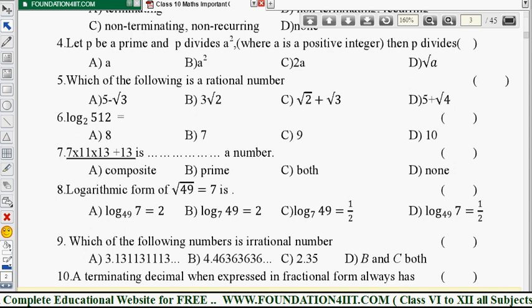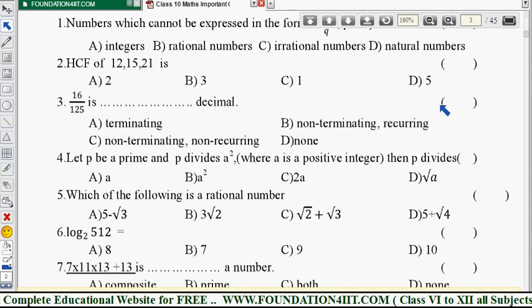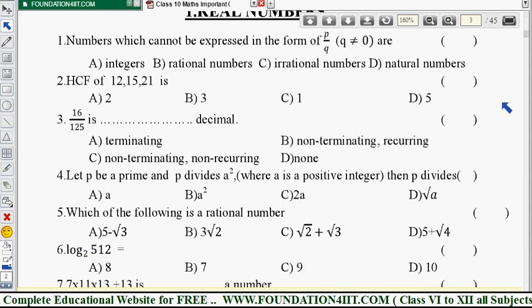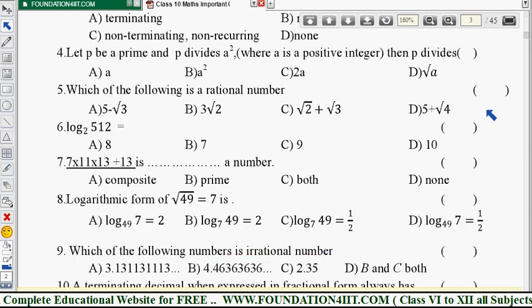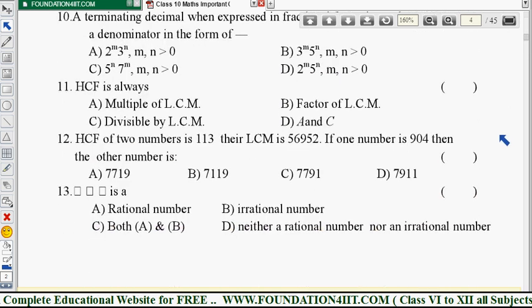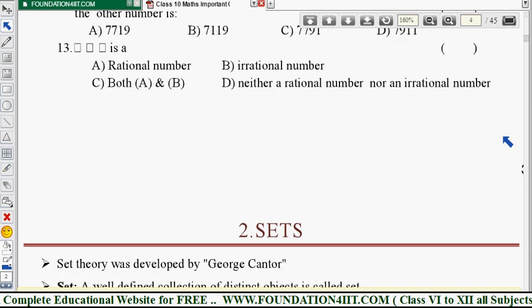The same real numbers, objective type of questions with options ABCD. The objective will come in examination point of view and these are the dimensional questions in exam. So this is chapter 1, like this all the chapters.